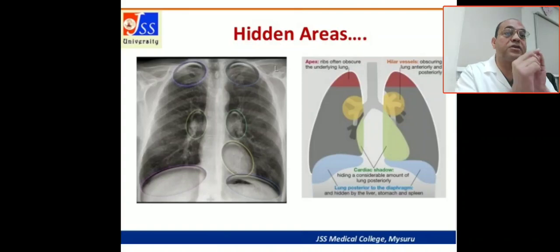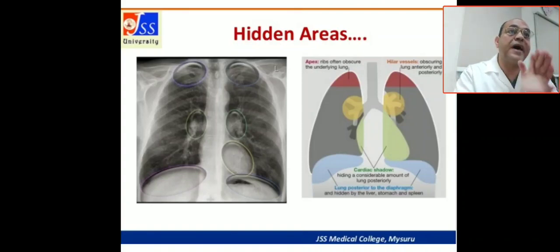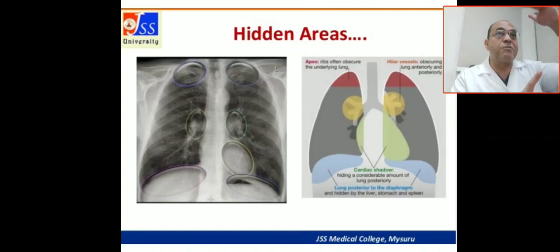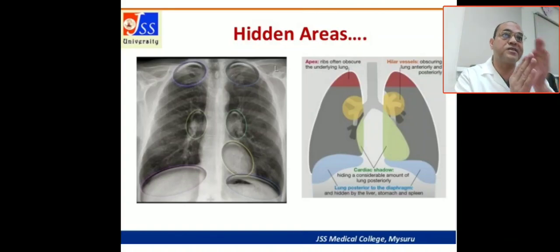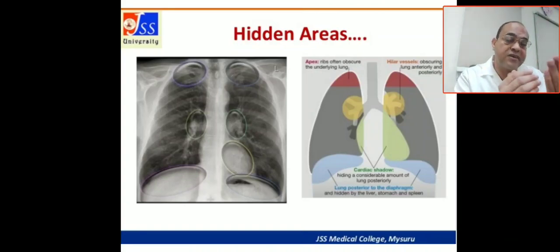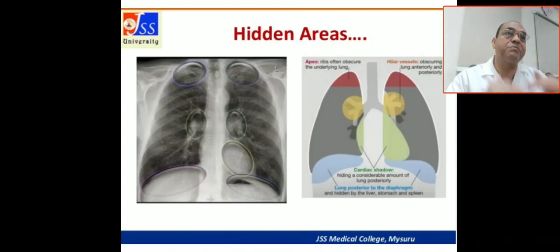So you have four hiding areas to comment about: the apical part, the hilar part, the retrocardiac part, and the diaphragmatic area. The upper part of the lung is hidden by the clavicle, the middle part is hidden by the hilar vessels, the retrocardiac area also hides the middle part, and the lower part of the lung is hidden by the liver, stomach, and spleen — we call it the diaphragmatic hiding area.